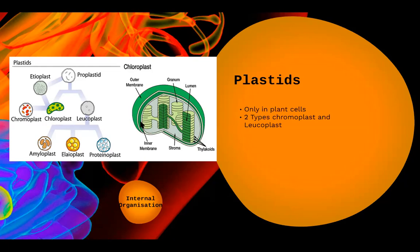Chloroplast has a structure similar to mitochondria: it has a double-membranous structure with an outer membrane and an inner membrane. But the inner membrane this time does not have any infolding — it is also continuous like the outer membrane. Inside, however, the structure is very strange: it looks like stacks of coins, where you've arranged 5–10 coins in a bunch forming several towers. These towers are called grana, each individual coin-like structure is called a thylakoid, and the grana are interconnected by structures called lamellae.